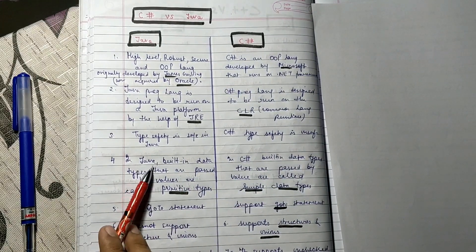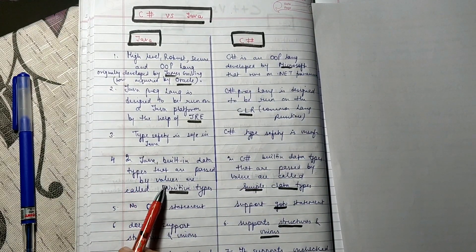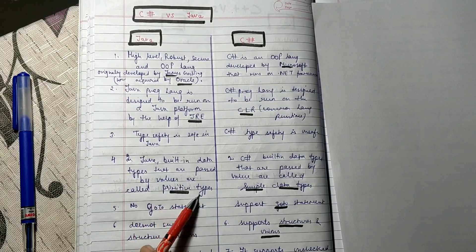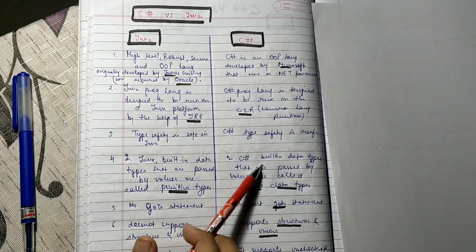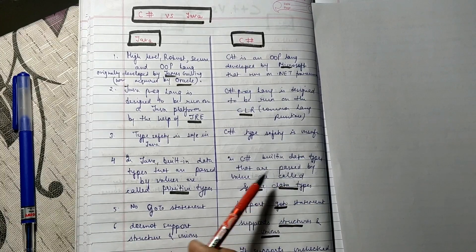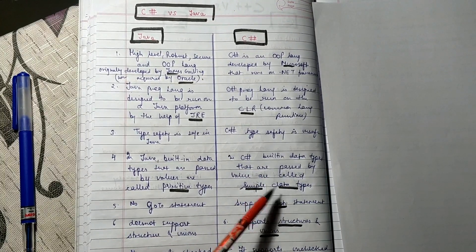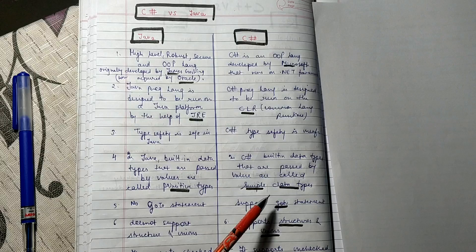In Java, built-in data types that pass by values are known as primitive types. In C#, built-in data types that pass by values are called simple data types, but now it has been changed.